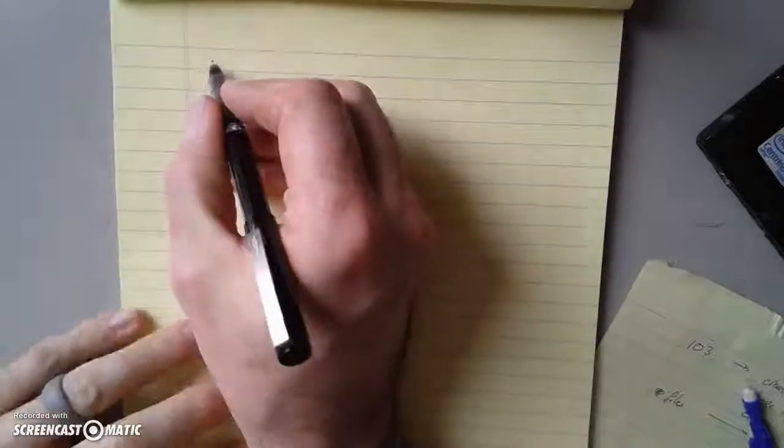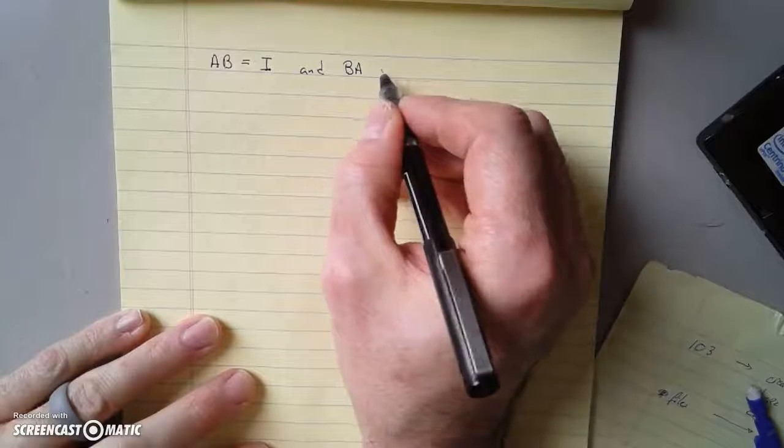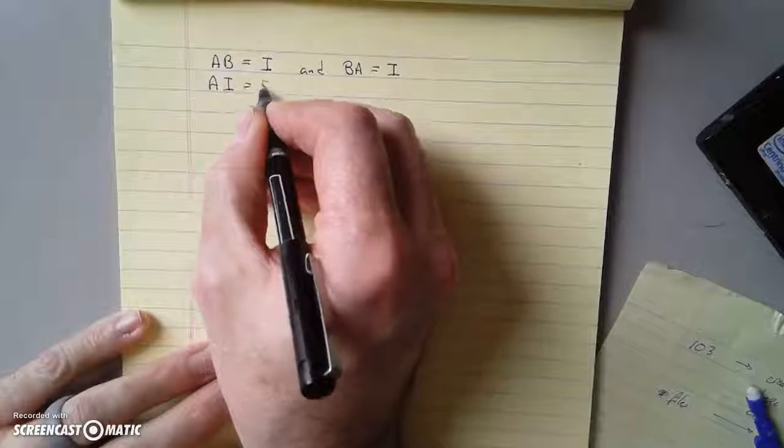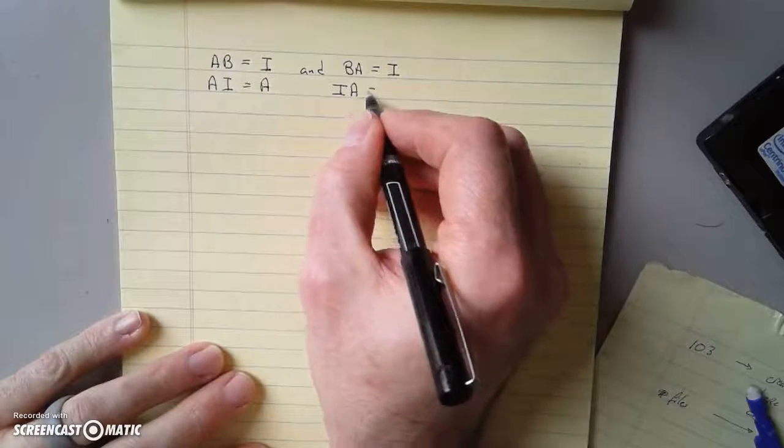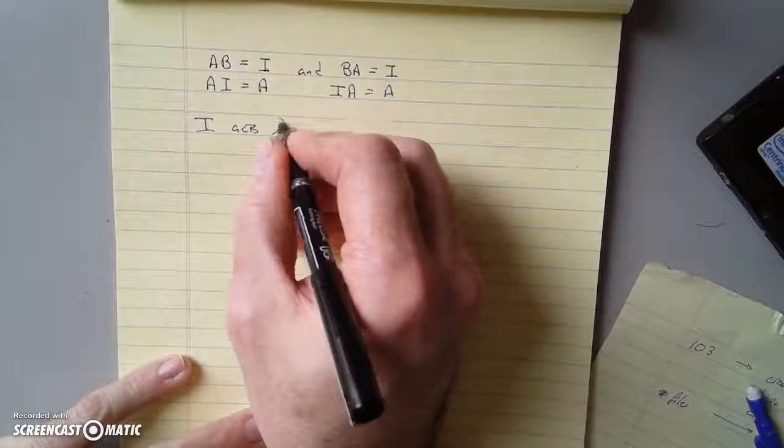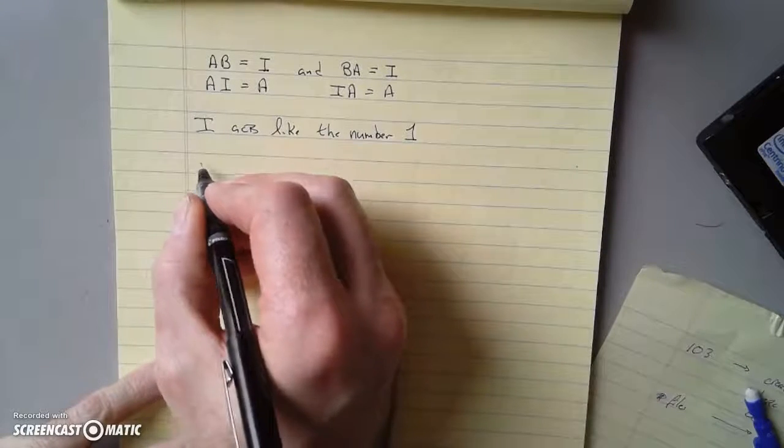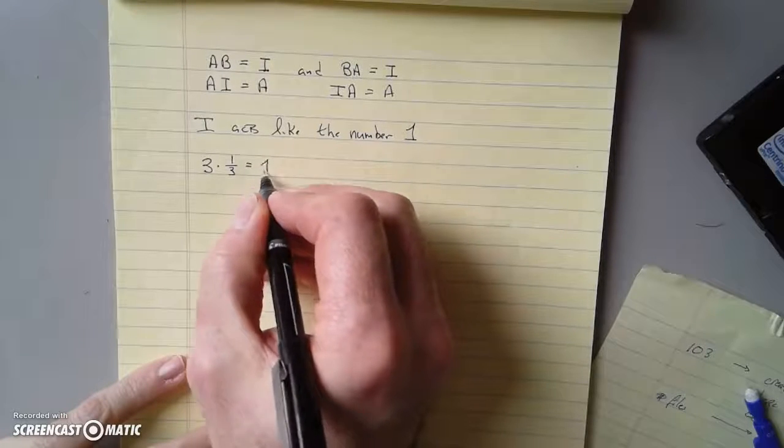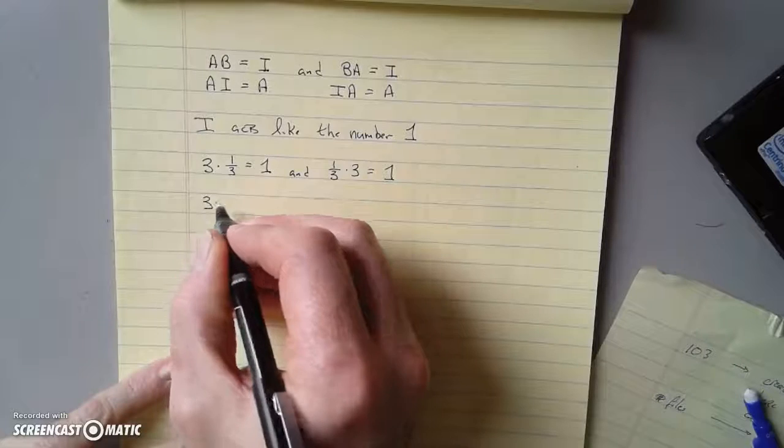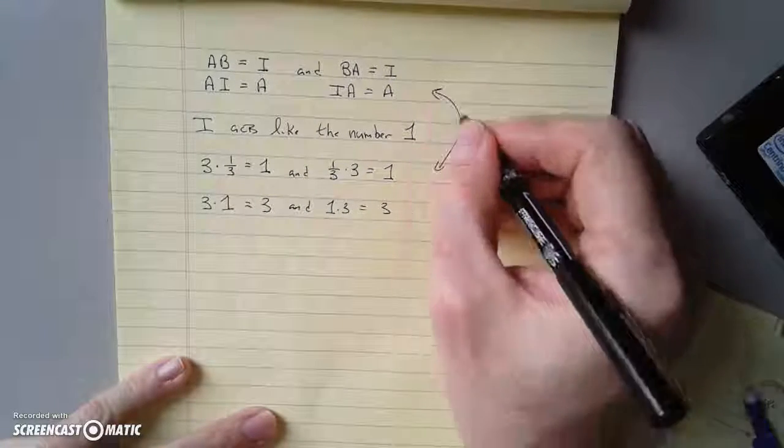Well, let's think about this. If you have A times B equals I, and B times A equals I, then you have A, I is A, and you also have I, A is A. Then let's continue the analogy of the number 1. So I acts like the number 1. And the analogy is this, it's like 3 times 1/3 is 1, and 1/3 times 3 is 1, and 3 times 1 is 3, and 1 times 3 is 3. This is the analogy.